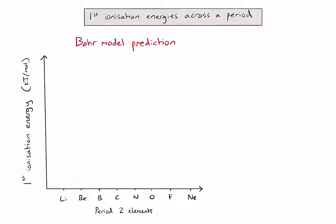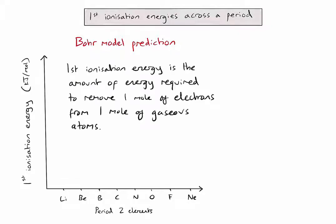To predict the pattern in first ionization energy, it's useful to have a definition. Here is the IB definition: first ionization energy is the amount of energy required to remove one mole of electrons from one mole of gaseous atoms. Put simply, we are taking an electron from an atom. This can be represented by a general equation where we start with one mole of gaseous X atoms and after ionization we have X-plus ions and electrons.